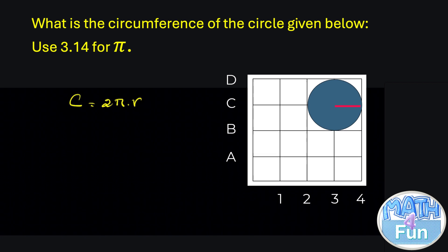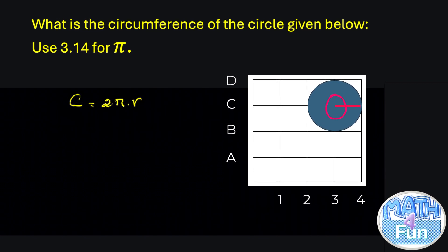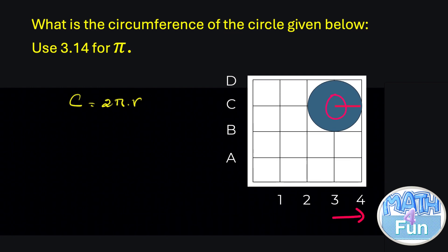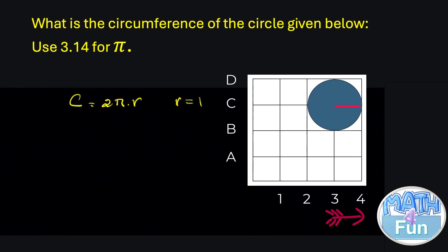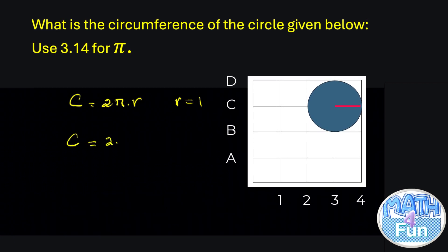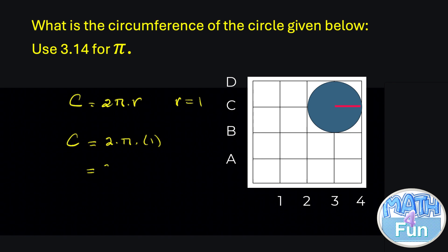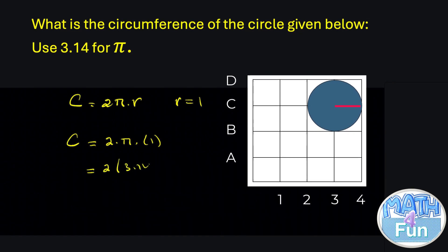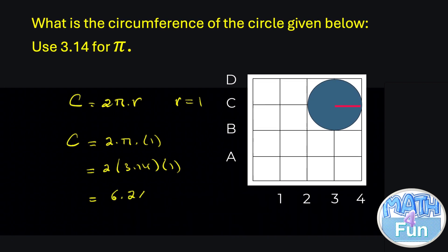So how much is the radius here? You can see that this is the center here, and we can count the radius — it is only one unit, so the radius is equal to 1. We can substitute it in the formula: circumference = 2 times pi times 1, and they said use 3.14 for pi. So we write equals 2 times 3.14 times 1, and by calculator you get the answer as 6.28.